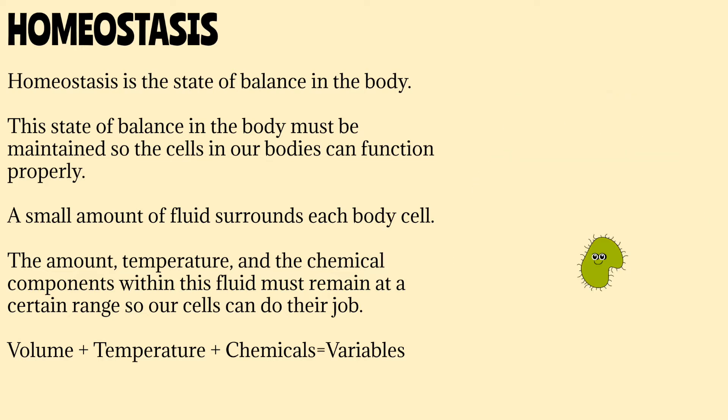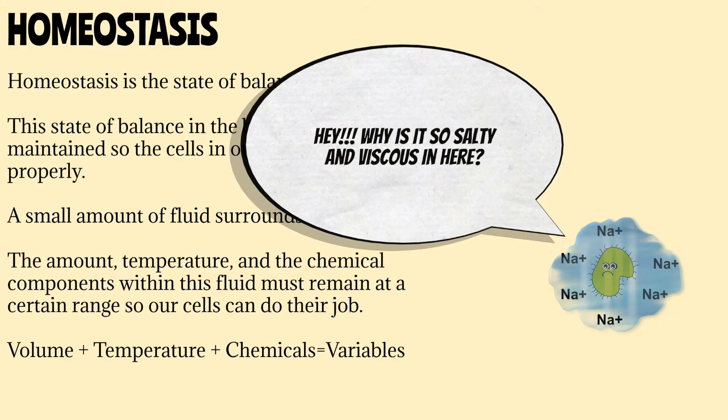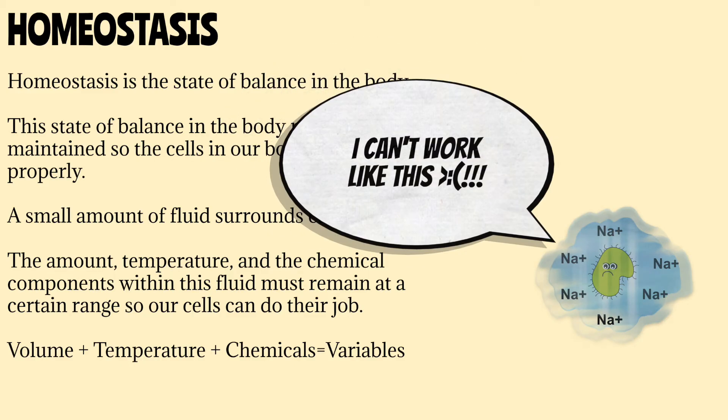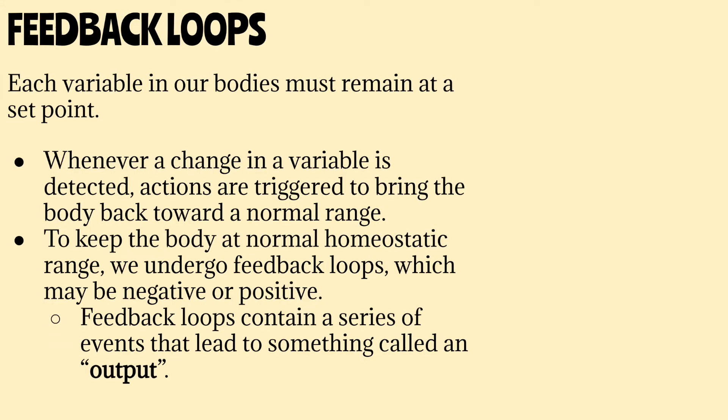Here's another way you can look at it. Each cell in our bodies has a small amount of fluid surrounding it. If one of these variables, such as the amount of fluid surrounding the cell or the chemical components in the fluid surrounding the cell, become too thick or too salty, it may be hard for that cell to function properly. So our body must maintain internal stability so the cells in our body can do their job properly. Now let's talk about set points and normal range. All variables must remain at a set point, but because our bodies may sometimes fluctuate, no one's body can always remain at an exact set point at all times. So our bodies will maintain something called a normal range.